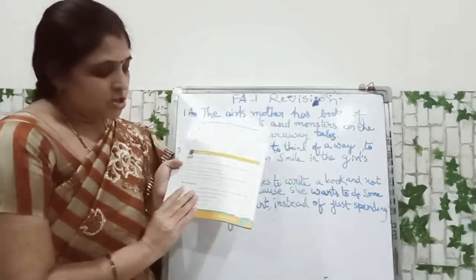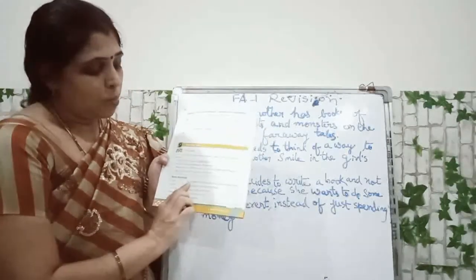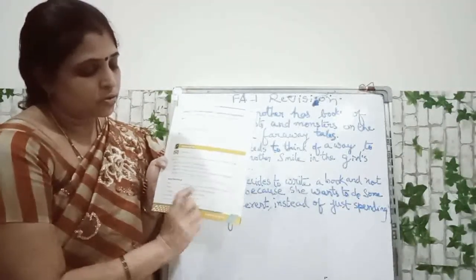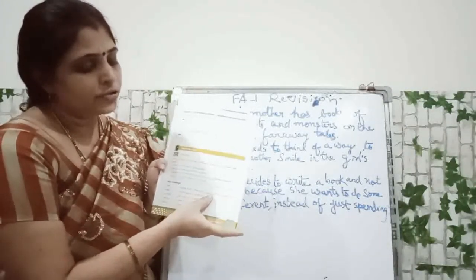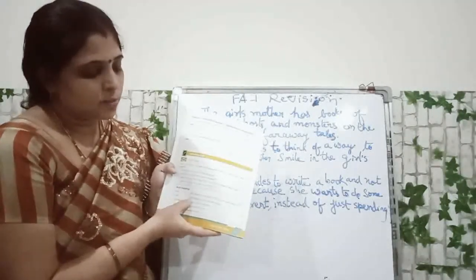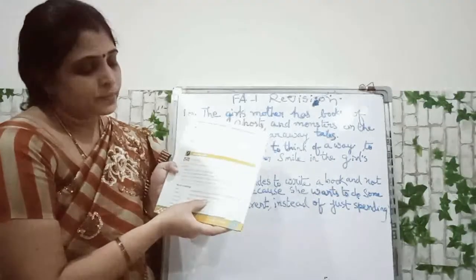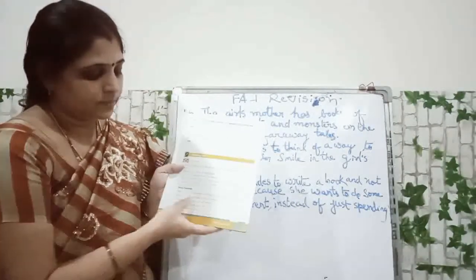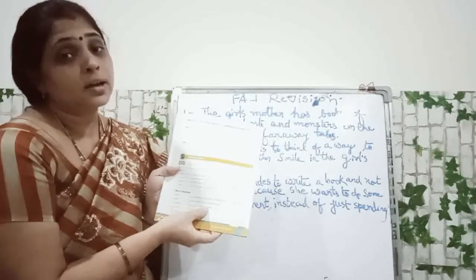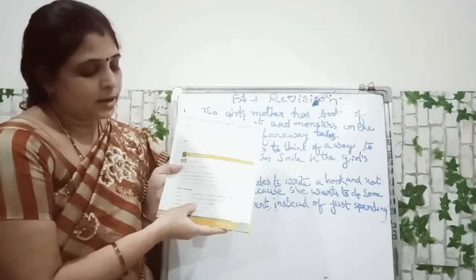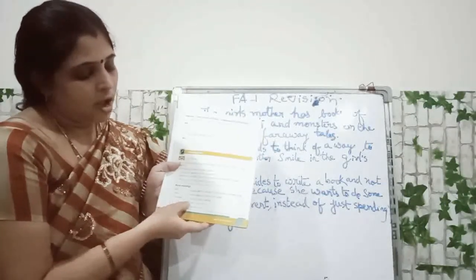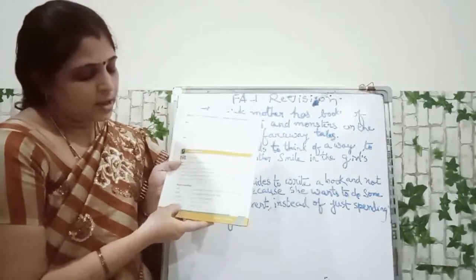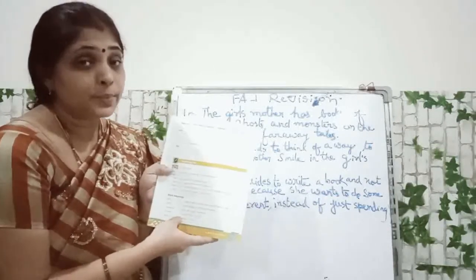Read again, children. Shelf means boards fixed to the wall on which one can keep things. Fairies means small magical creatures with wings. Monsters means big ugly scary creatures. Far away means a place that is far off. Idea pot means a person's mind.